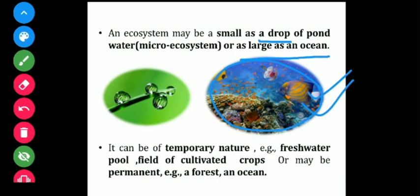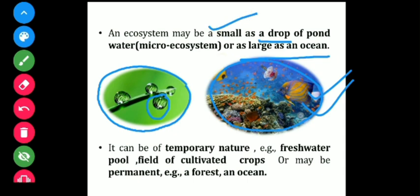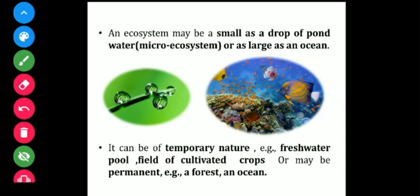Even a small drop of water can be considered an ecosystem, because we never know that in a small drop of water there are some microbes — so even that small drop of water can be acting as a habitat for certain microbes. Ecosystems may also be temporary or permanent.